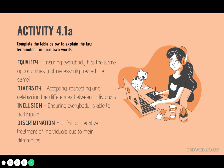The Equality Act 2010 recognises nine protected characteristics that it is unlawful to discriminate against. They are: race, age, disability, gender, gender reassignment, pregnancy and maternity, marriage and civil partnership, religion and belief, and sexuality.